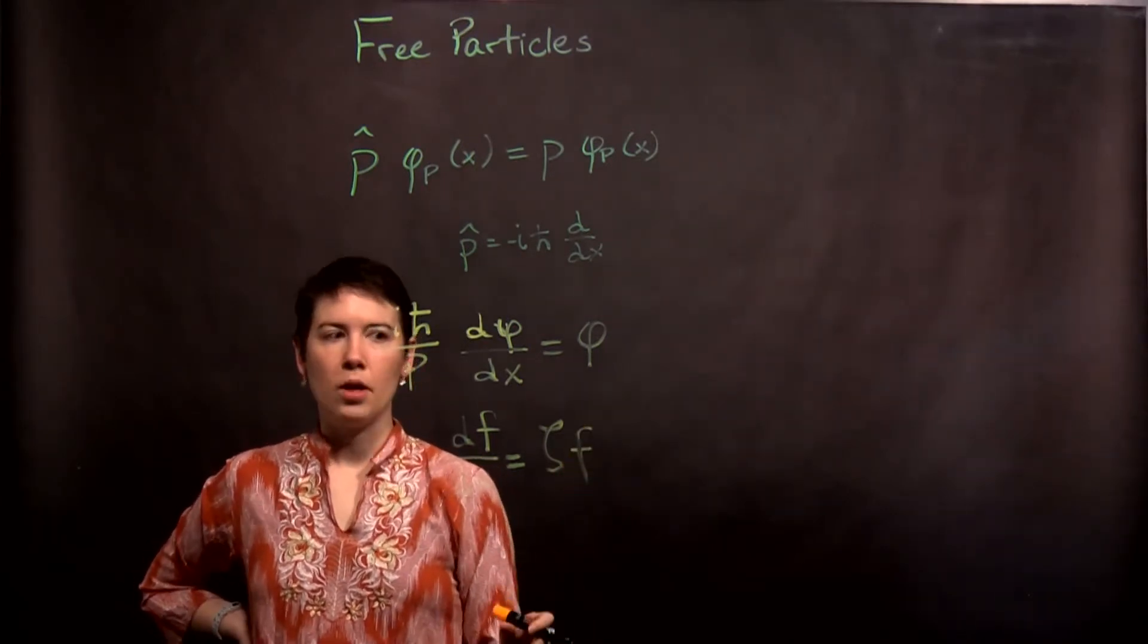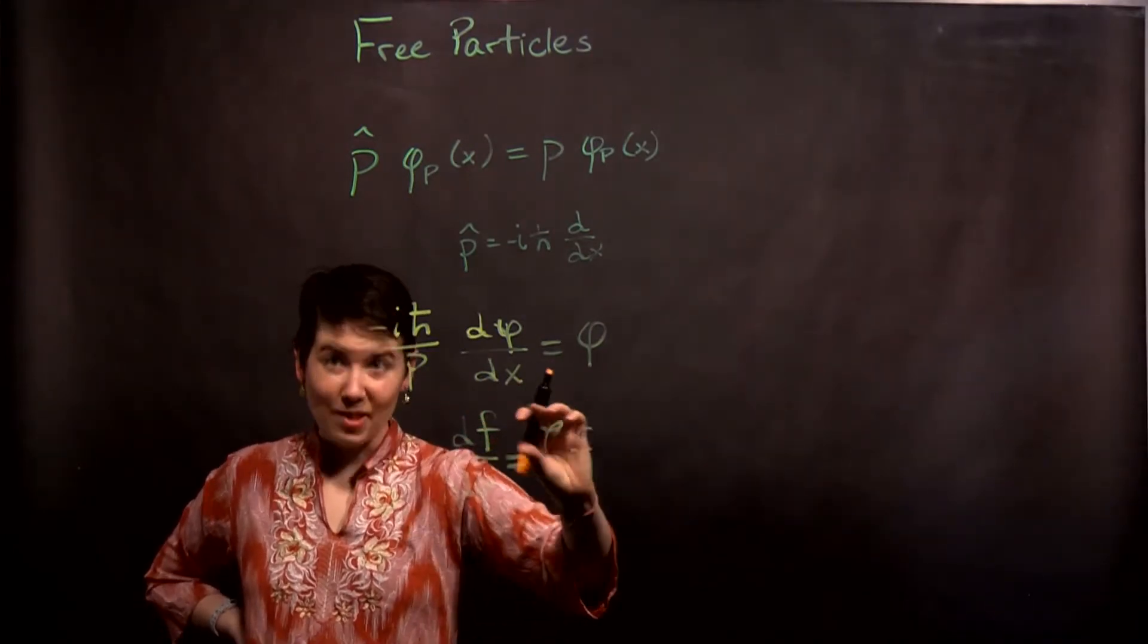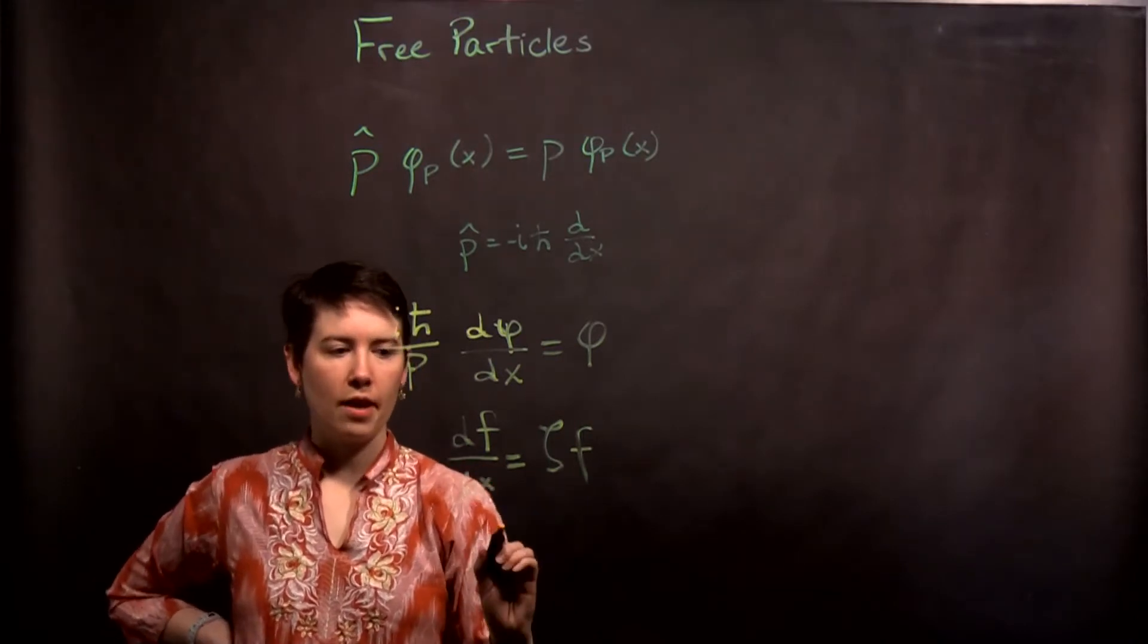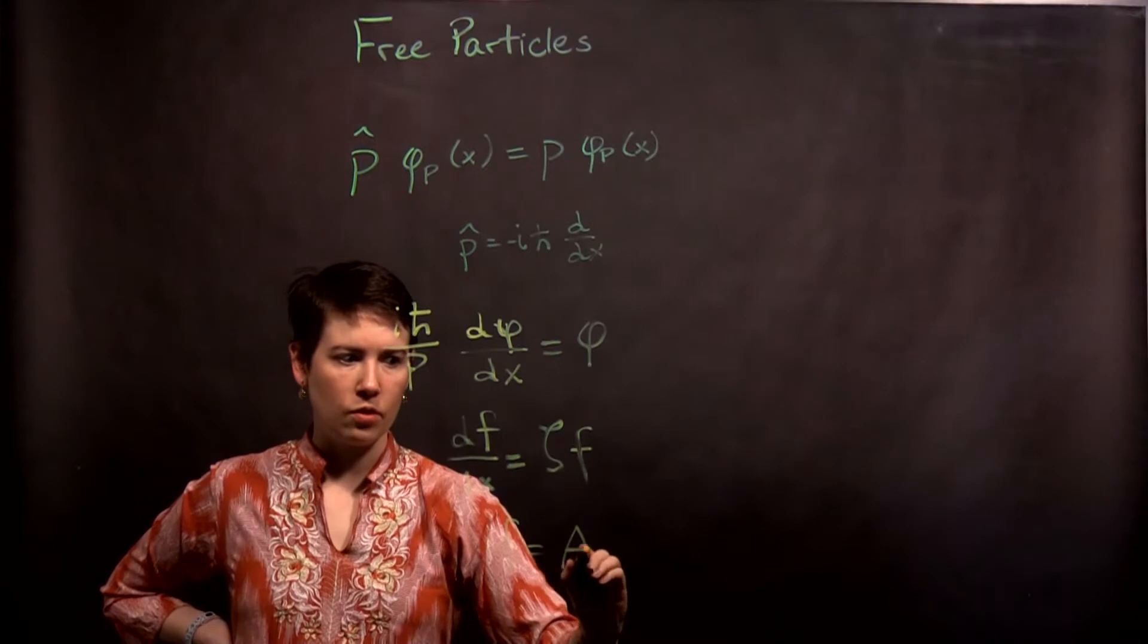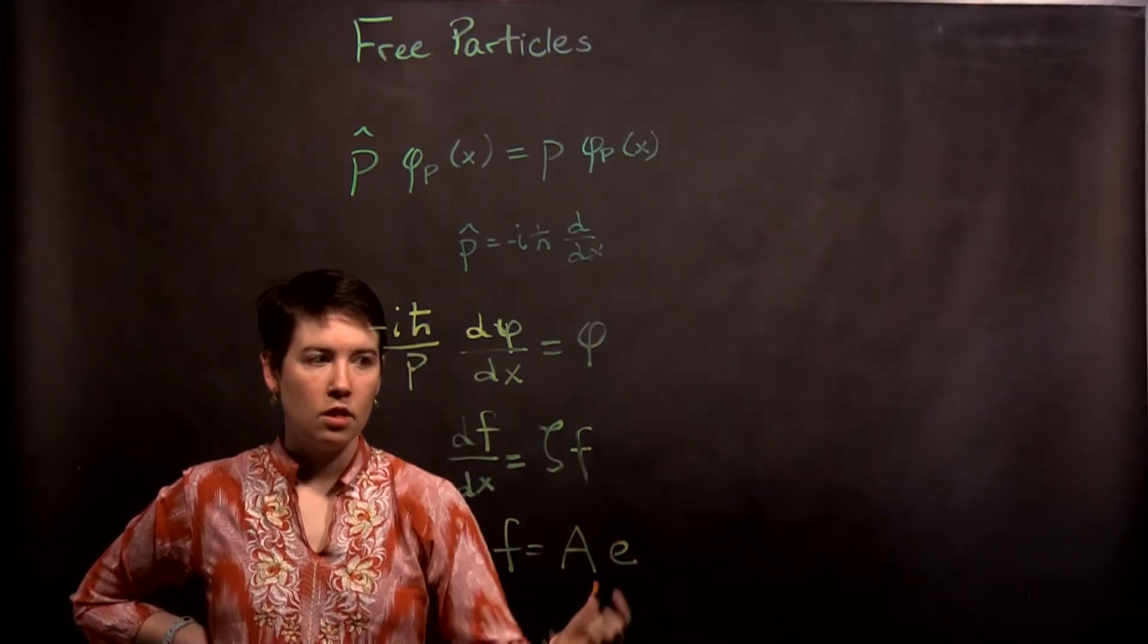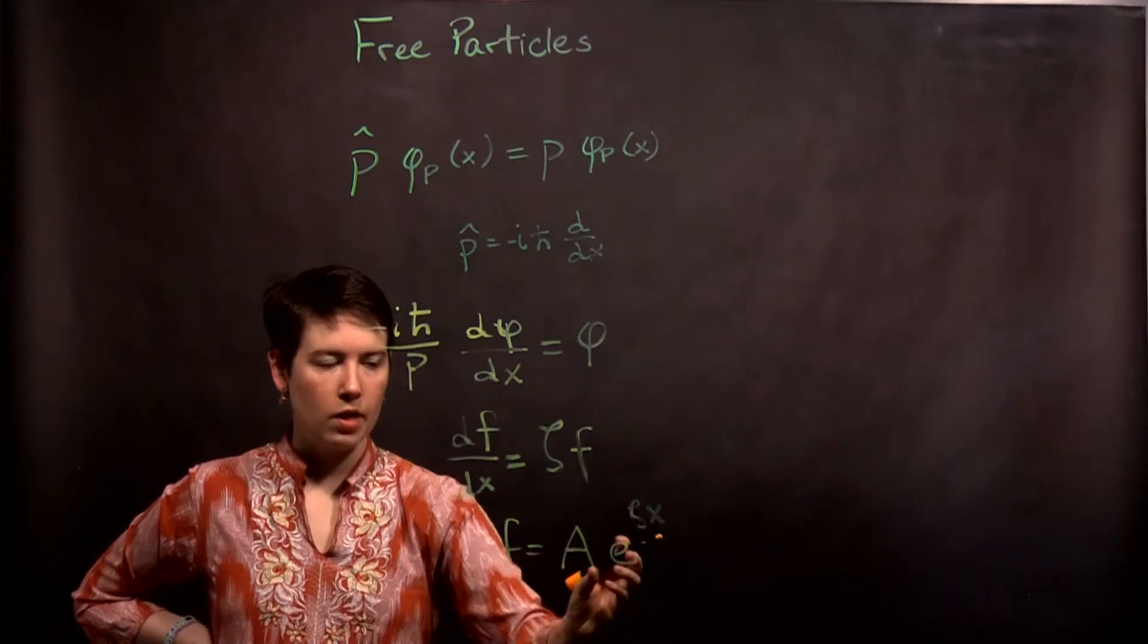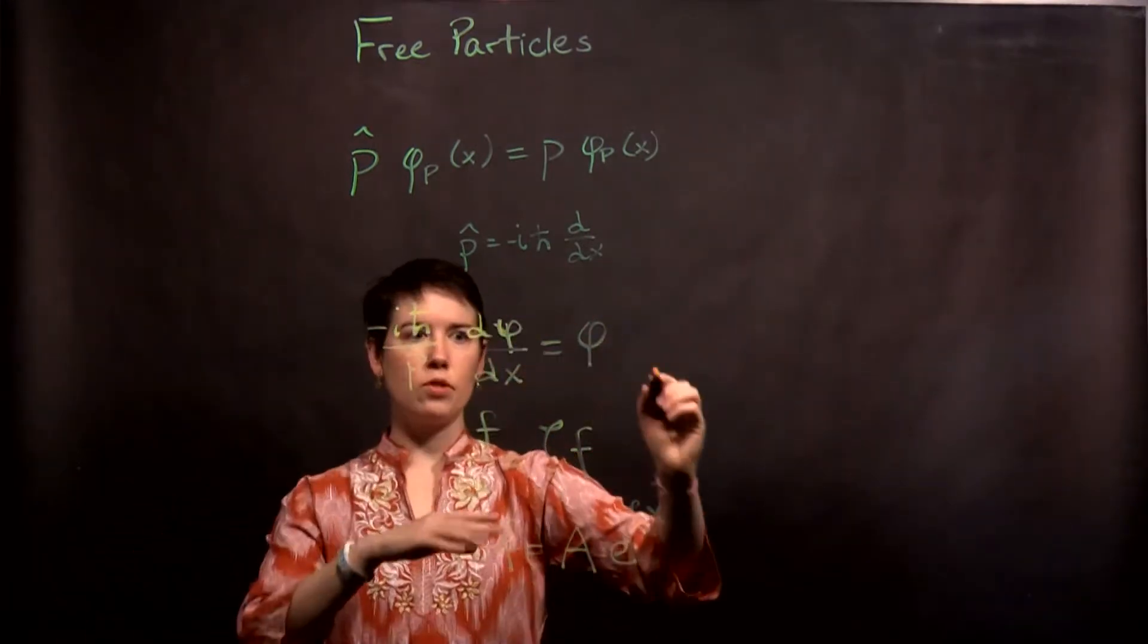So it has this form, that we've taken a derivative with respect to x, we get a scalar out times our original function. Well that clearly is going to have the form then, that we have some coefficient out front, e, to then this Greek letter, x. We take the derivative, that comes down.